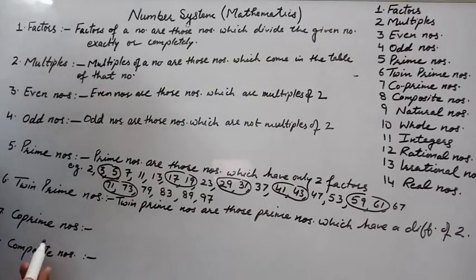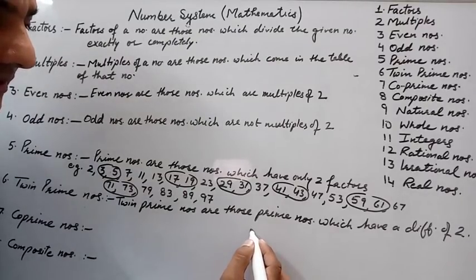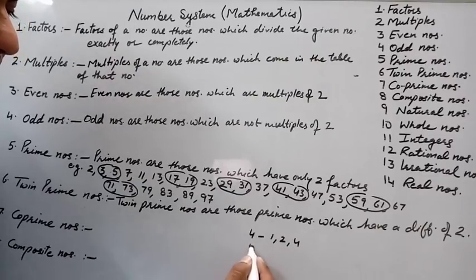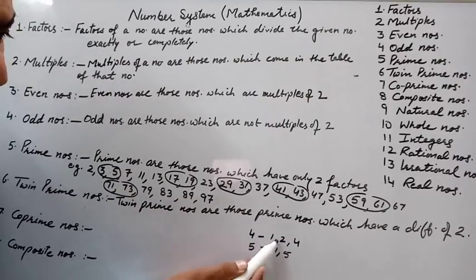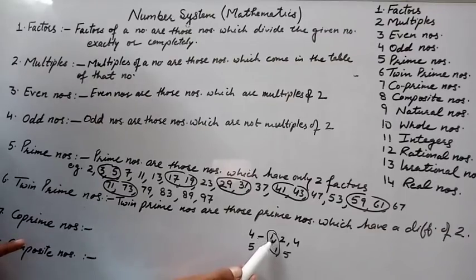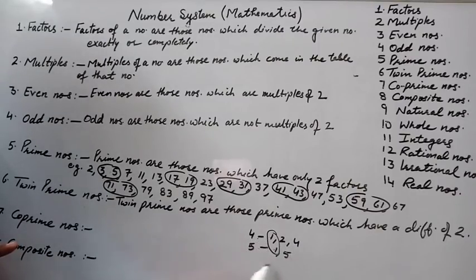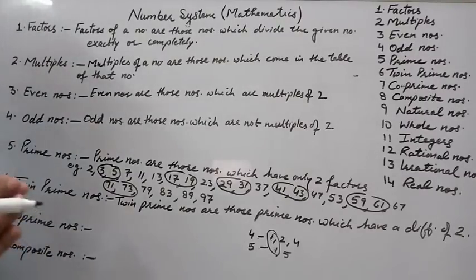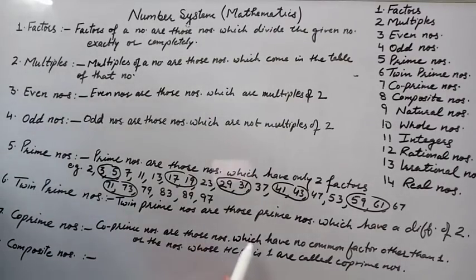Co-prime numbers are those numbers which have no common factor other than 1 — that is, their HCF is 1. For example, factors of 4 are 1, 2, 4 and factors of 5 are 1, 5. Their only common factor is 1, so 4 and 5 are co-prime numbers. Co-prime numbers are those numbers whose HCF (highest common factor) is 1.